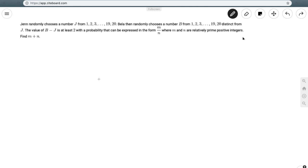Jen randomly chooses a number j from 1, 2, 3, all the way to 19, 20. Bella then randomly chooses a number b from that same set, distinct from j. The value of b minus j is at least 2, with a probability that can be expressed in the form m over n, where m and n are relatively prime positive integers. Find m plus n.